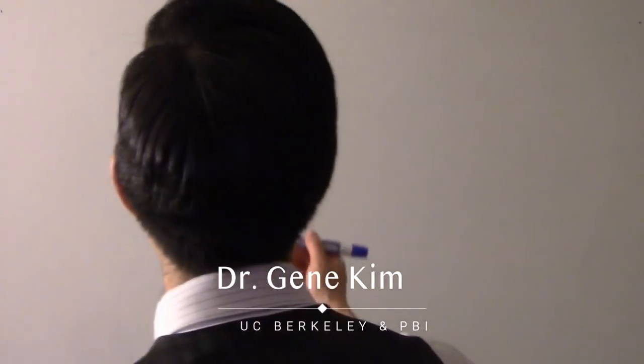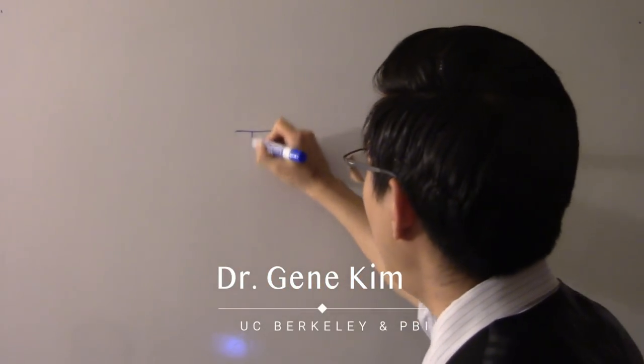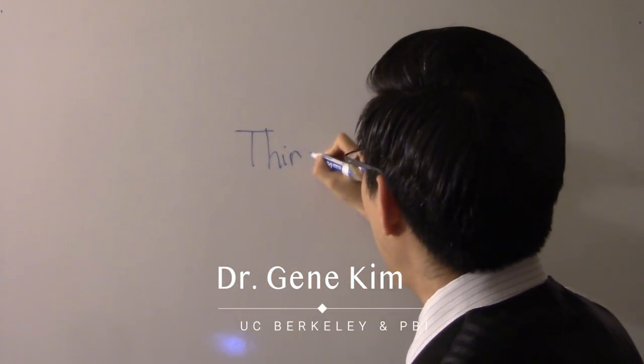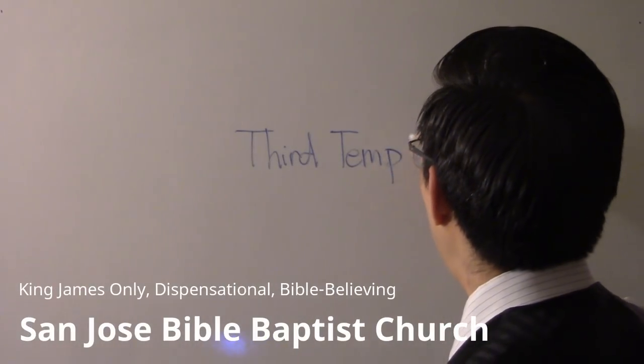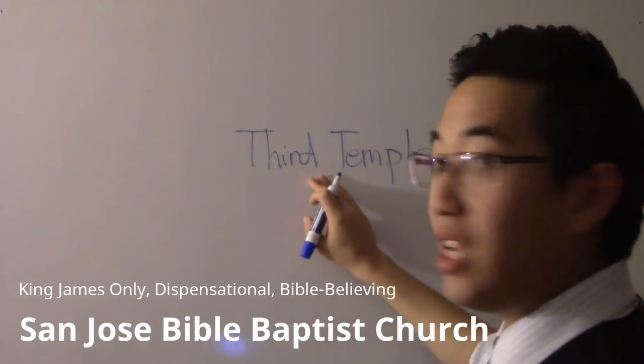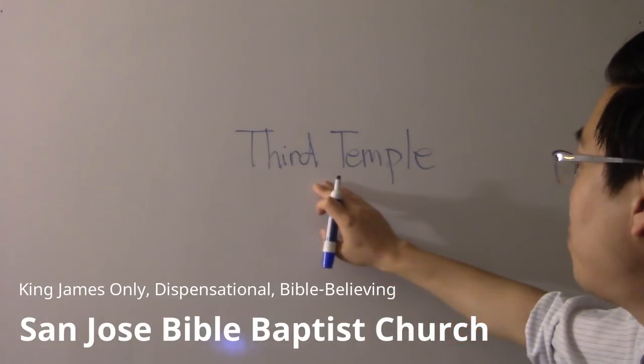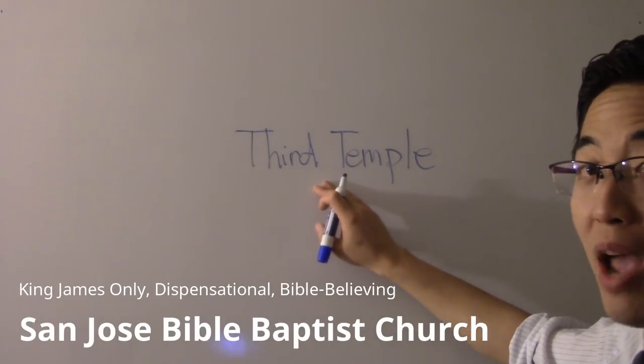In order for the rapture to happen and the tribulation to start, you need that third temple. So everyone's looking at that one, the third temple. Now here's the thing: the third temple doesn't have to be where they plan out its construction and complete the whole building in a slow manner.